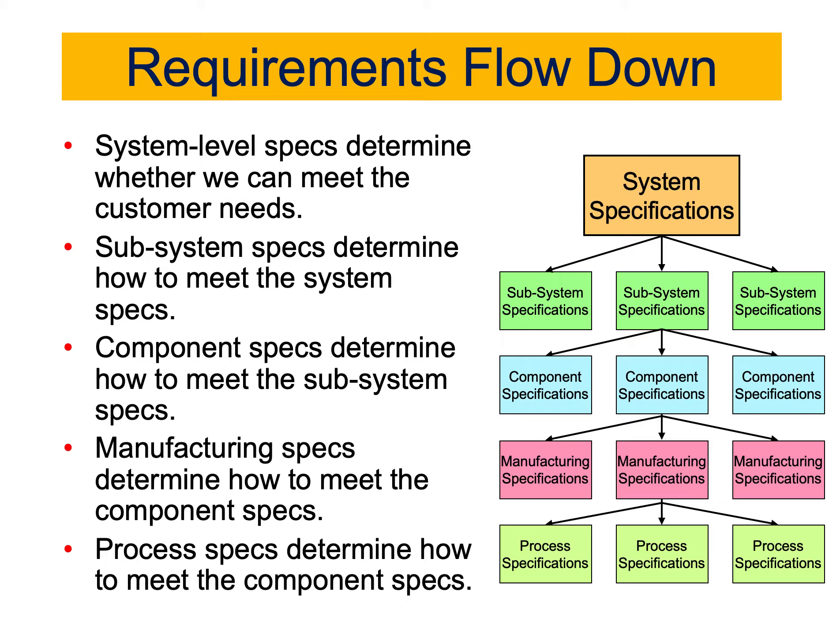This can be done using technical terms, as engineers typically do, but also using something called budget allocation, where you assume the product will simply be the sum of all quantities from each subsystem. For example, if we are looking at mass: if the mass of each component is X, Y, and Z, then the mass of the subsystem will be the summation of all these masses — which is a linear relationship. However, this is not always the case.